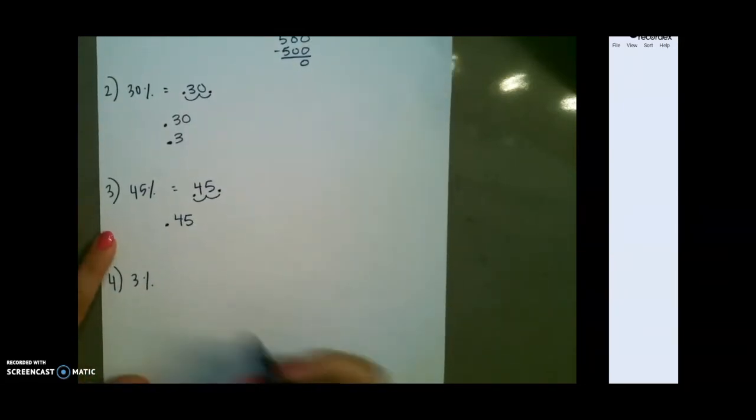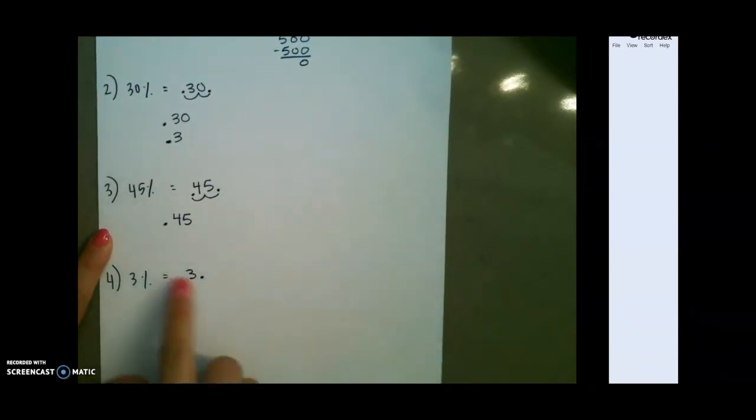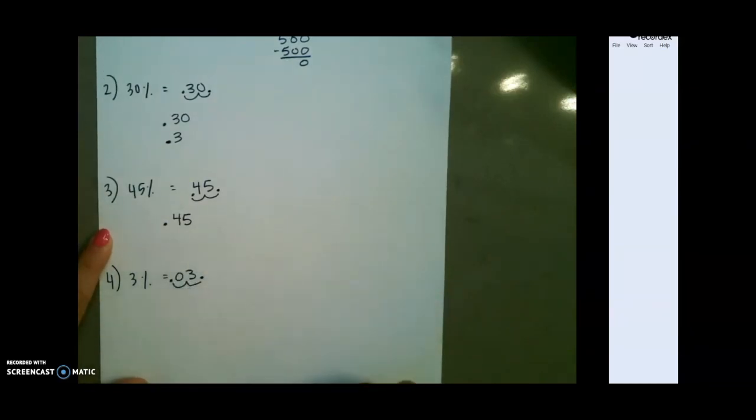And lastly, we have our decimal at the end of the number, move it two places to the left, add a zero for three hundredths or .03.